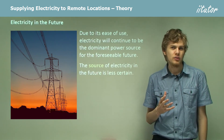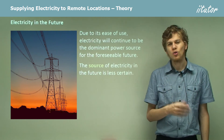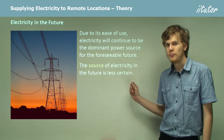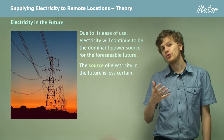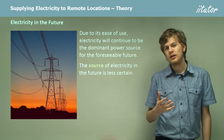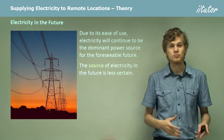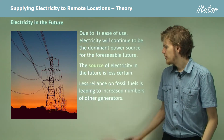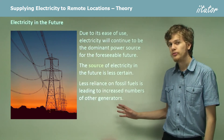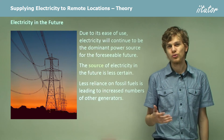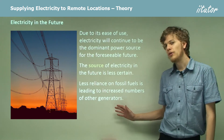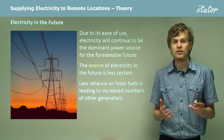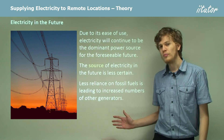Right now we usually use coal power or nuclear power in order to generate electricity. In the future we might find other sources of energy that we can convert to electricity, perhaps more efficiently or more safely. Less reliance on fossil fuels, as we run low on them, is leading to an increased number of other generators. Right now nuclear generators in particular are becoming more common.